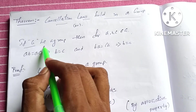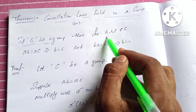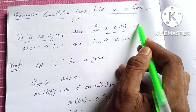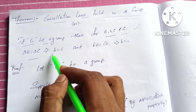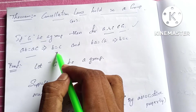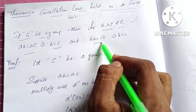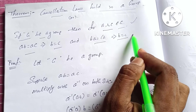If G be a group, then for a, b, c belonging to G: if ab is equal to ac, then b is equal to c. And if ba is equal to ca, then b is equal to c.